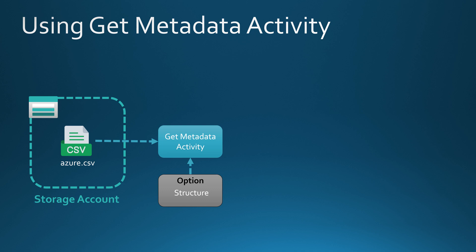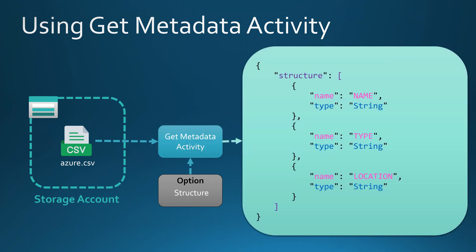Let's set the option to structure and see what output the Get Metadata activity yields. After it runs, we get a structure array in the output containing all the columns and their data types from the CSV file. We can see column name with type string, column type with type string, and column location with type string — since it's a CSV file, everything is of type string. Like with the lookup activity, the outputs of Get Metadata are available to be used in following activities as dynamic content, allowing us to build extra logic into our pipeline.